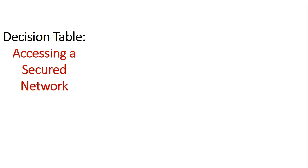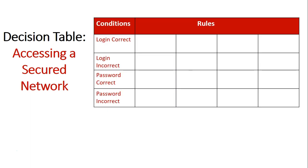We're now going to take a look at a decision table for accessing a secured network. Firstly, we need to plan the structure of the table. Decision tables contain two main sections. The first part is the conditions, and these are all the possible conditions that can occur within the information system.